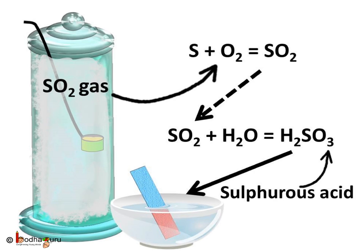What is the chemical equation here? Sulphur reacted with oxygen and produced sulphur dioxide: S + O₂ = SO₂, where SO₂ is sulphur dioxide. When sulphur dioxide gets dissolved in water, we get sulphurous acid. The chemical equation for it is SO₂ + H₂O = H₂SO₃, where H₂SO₃ is sulphurous acid.